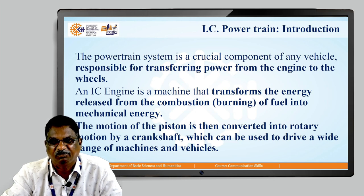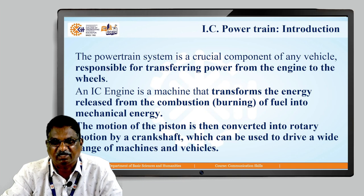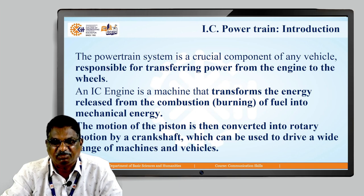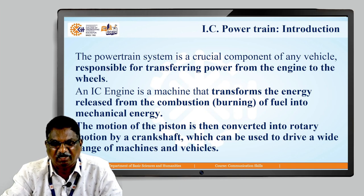Whatever power is generated by the IC engine is transferred towards the wheels. An IC engine is a machine that transforms the energy released from the combustion of fuel into mechanical energy. The motion of the piston is then converted into rotary motion — because initially you get linear motion — that is converted into rotary motion by a crankshaft, which can be used to drive a wide range of machines and vehicles.